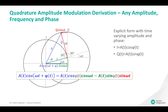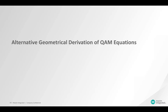Here, the QAM equation has been rewritten in the most general form with a time-varying amplitude and phase. In this form, the equation shows the power and versatility of quadrature modulation, capable of handling amplitude, phase, and frequency modulation.